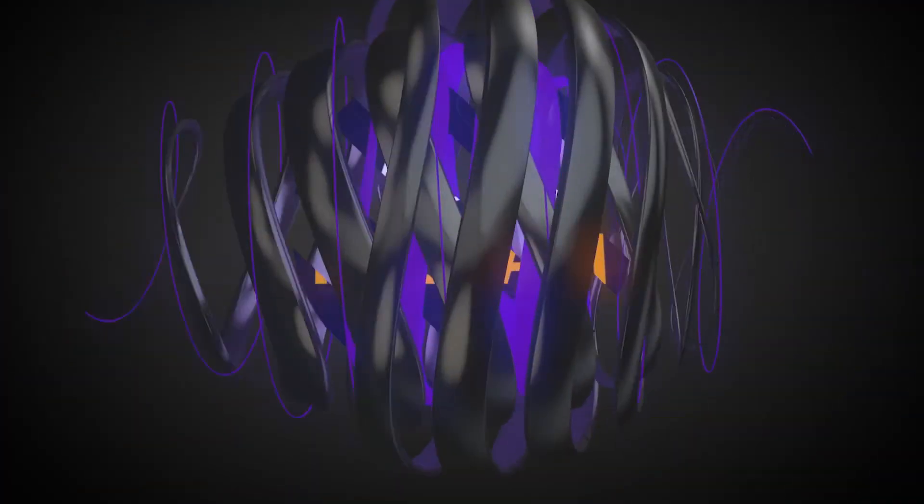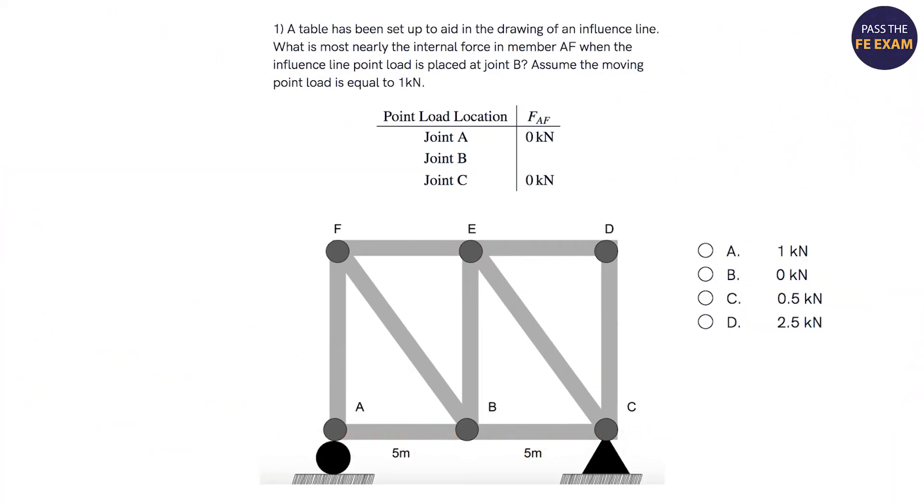So here's the problem. A table has been set up to aid in the drawing of an influence line. What is most nearly the internal force in member AF when the influence line point load is placed at joint B? Assume the moving point load is equal to one kilonewton.